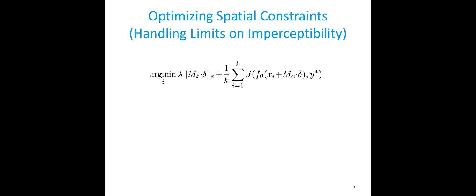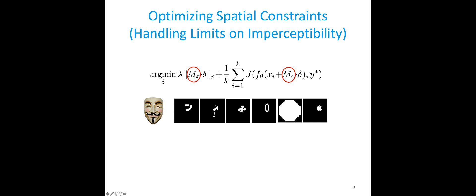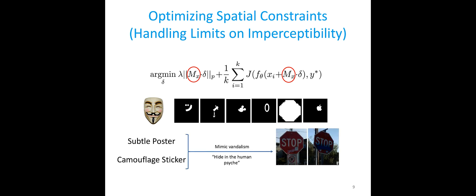This largely solves our first constraint of making the generated adversarial perturbation as robust as possible under different physical conditions. Next, we want to make sure the shape of the adversarial perturbation is meaningful and large enough to be captured by a camera. We introduce the spatially constrained adversarial perturbation — constraining the perturbation into a mask region of meaningful shape that is hidden from human perception, but actually fools the cameras equipped in an autonomous driving vehicle. We use L1 loss to find the most vulnerable sparse regions, then smooth the perturbation inside the mask with L2 or total variation loss.